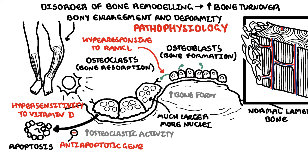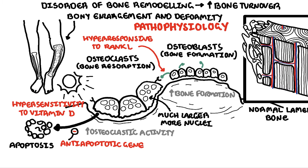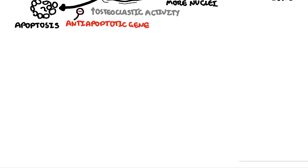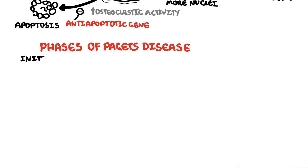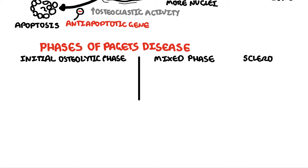Bone breakdown is then followed by bone formation, which leads to bone enlargement and deformed-looking bones. The bony changes seen in Paget's disease can be divided into three phases: the first phase is the osteolytic phase, followed by the mixed phase, and finally the sclerotic phase.